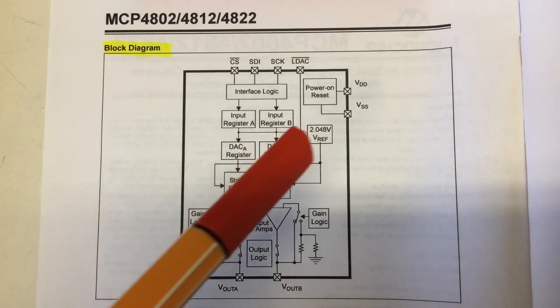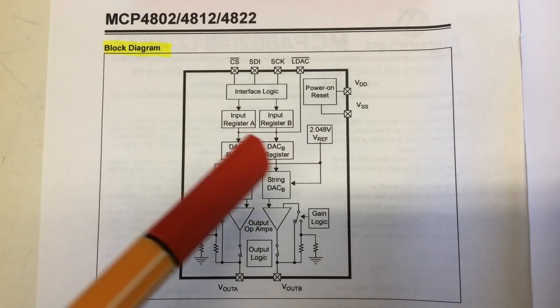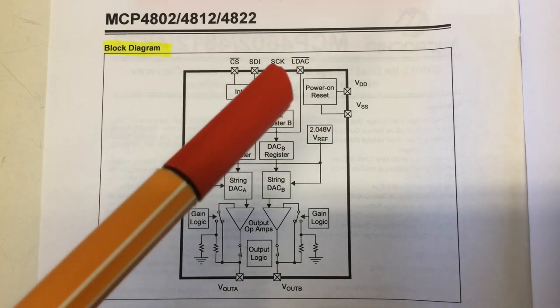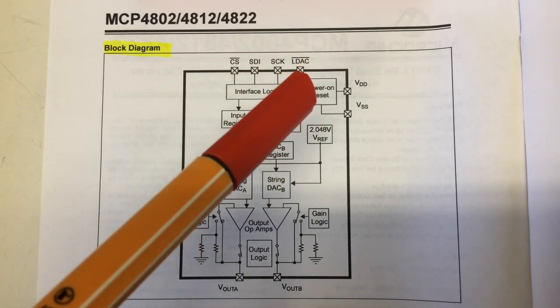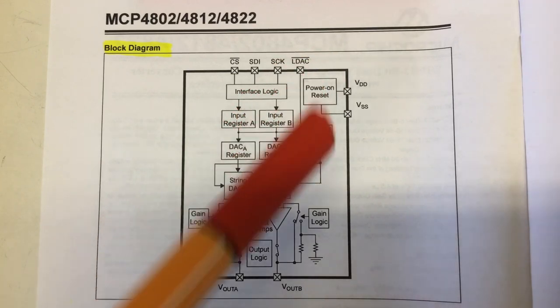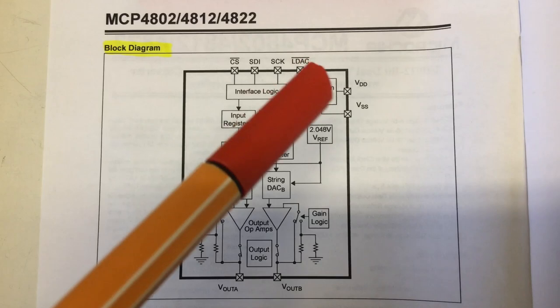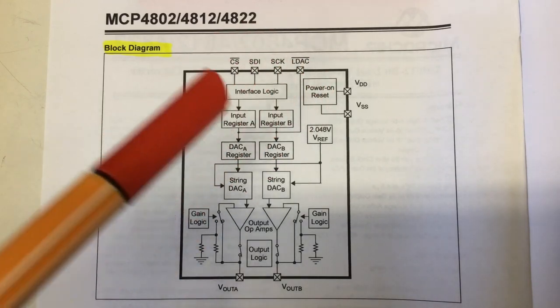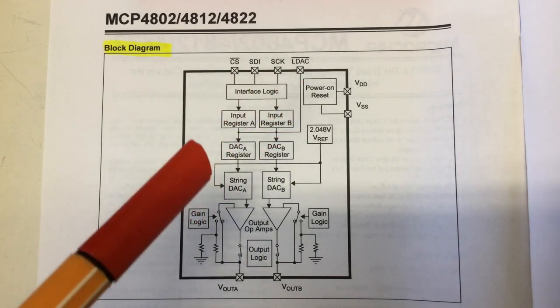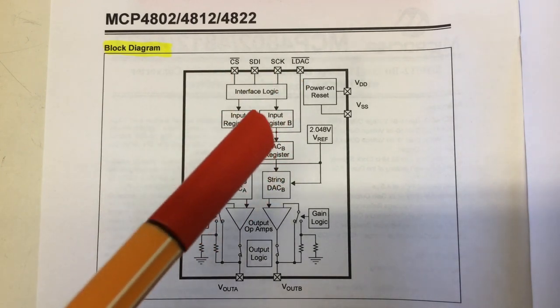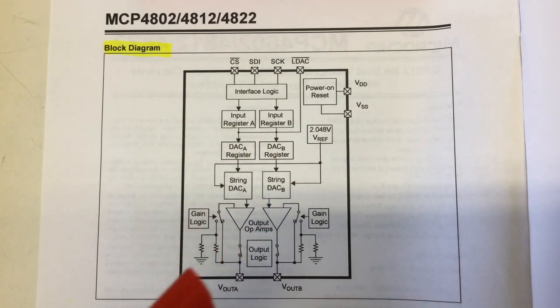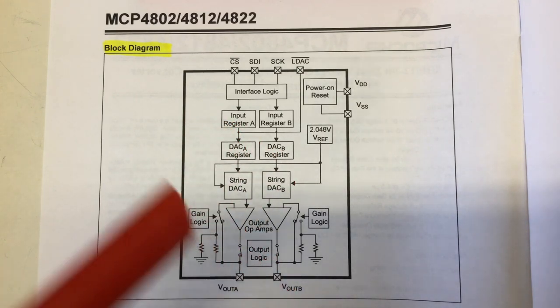You have a second row of registers, which are loaded from these SPI controlled registers. But only if that pin LDAC is low. If that pin is high, you can do on the SPI interface load whatever values you want into these registers.